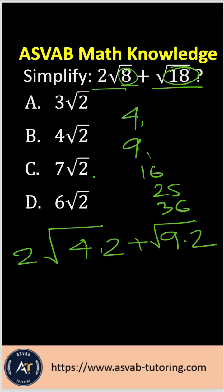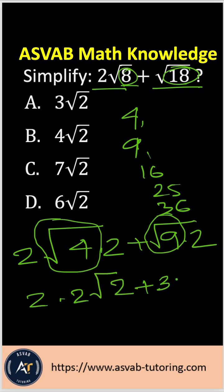The reason we did that is because this is actually 2 and this is actually 3. So 2 times 2√2 plus 3 times √2.